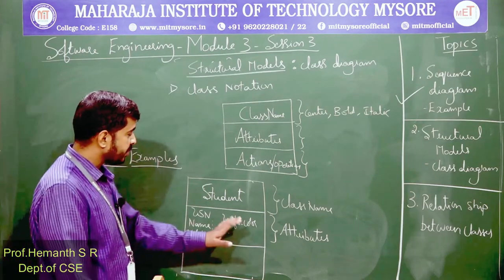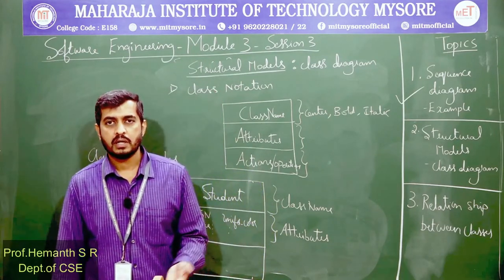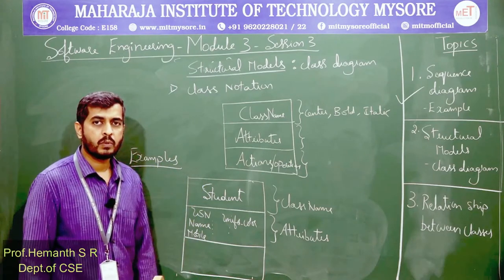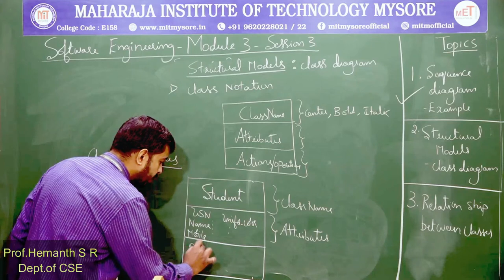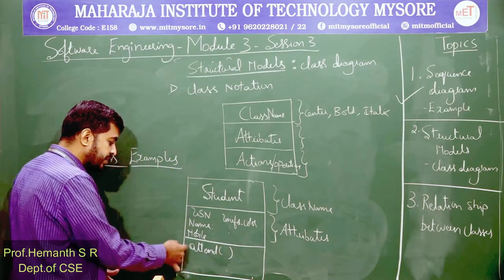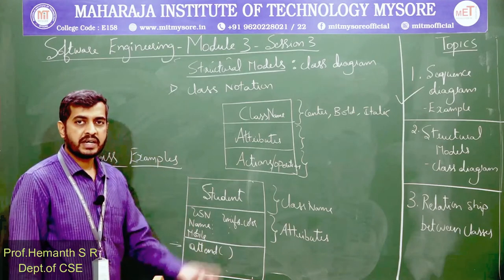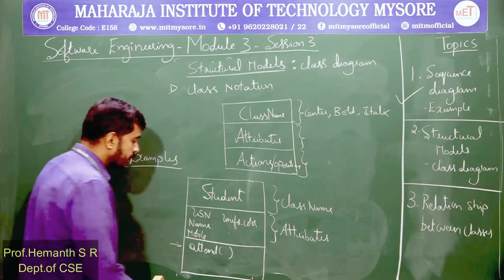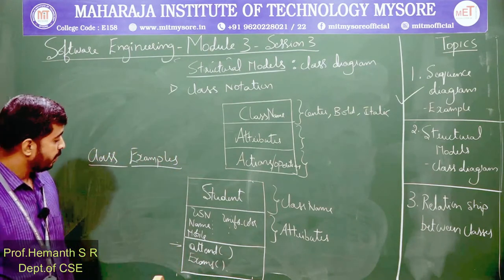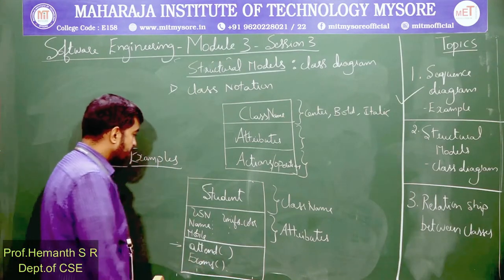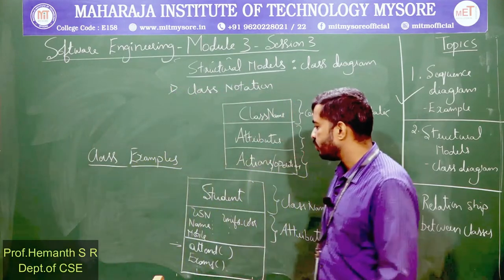The third block deals with actions or operations associated with the class — activities that can be done by a student, unique to a student. For example, a student can attend class — that is an action verb. A student can write exams — also an action verb. This was the example of class Student, showing how to construct a class for the student entity.